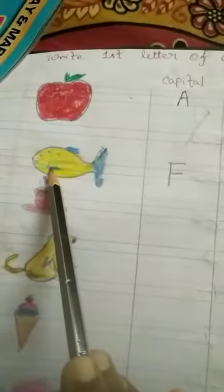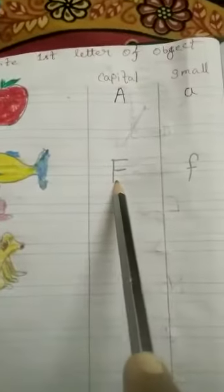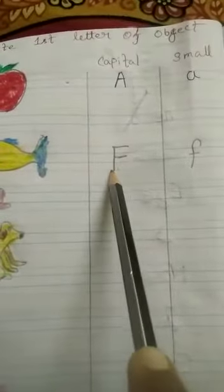Next one is fish. What for fish? F for fish. This one is capital F. Next one is small f.